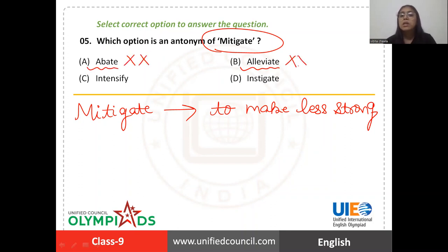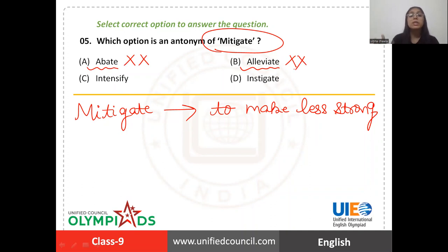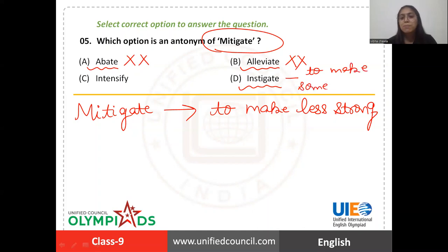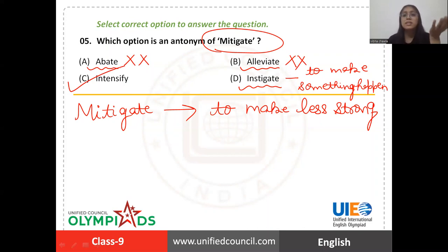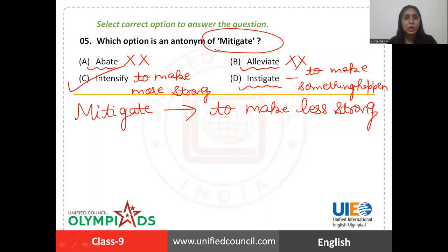'Alleviate' also means the same — to make something less strong. 'Instigate' means to make something happen, which we discussed in the last question. Now 'intensify' — you see, 'intensify' means you are increasing the intensity of something. It is the opposite of 'mitigate'. Mitigate means to lessen the effects; intensify means to make something more strong, more severe. So the opposite of 'mitigate' is option C: 'intensify'.